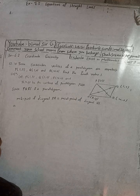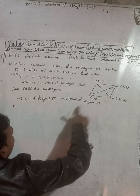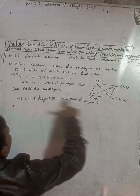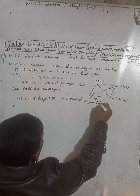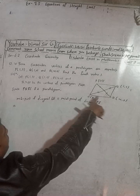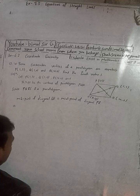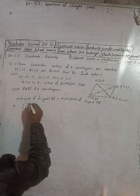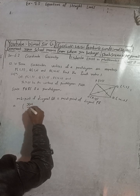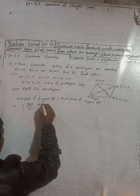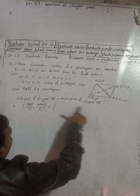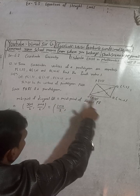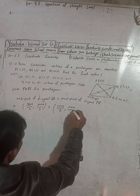I will compute the midpoint of QS first since it contains x. Midpoint of QS: Q is (1, 0) and S is (x, y), so the midpoint is ((x+1)/2, (y+0)/2). Midpoint of PR: P is (1, 2) and R is (4, 0), so the midpoint is ((1+4)/2, (2+0)/2).